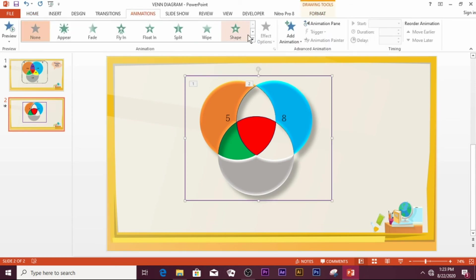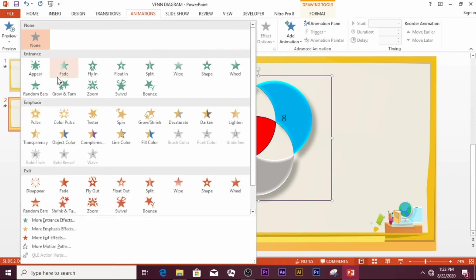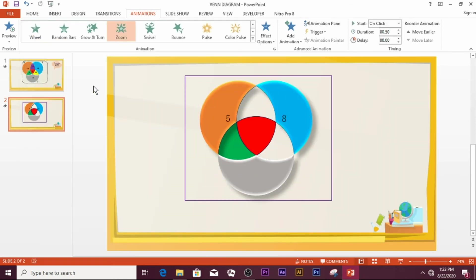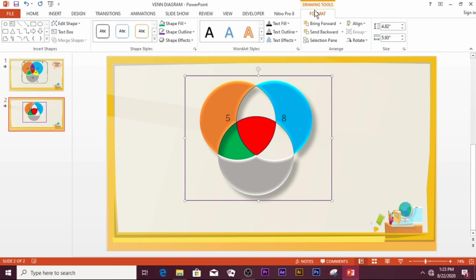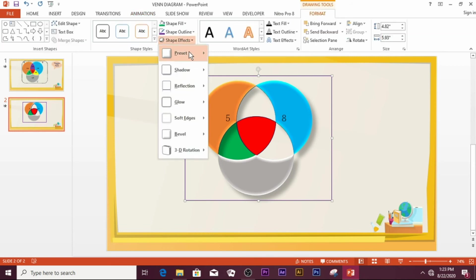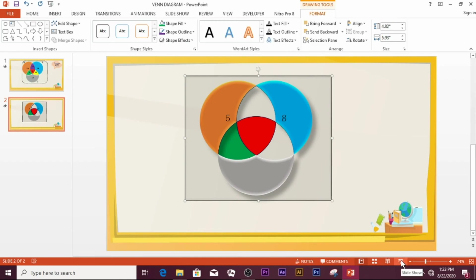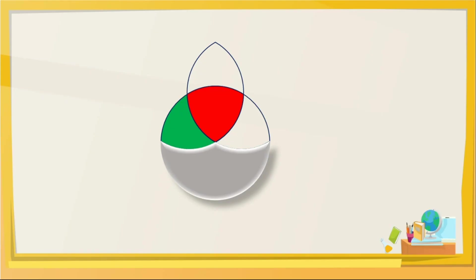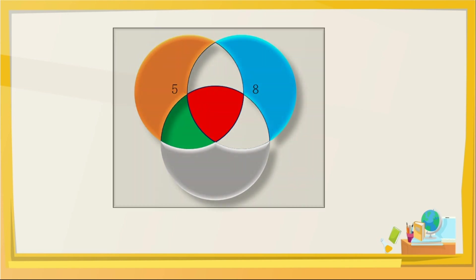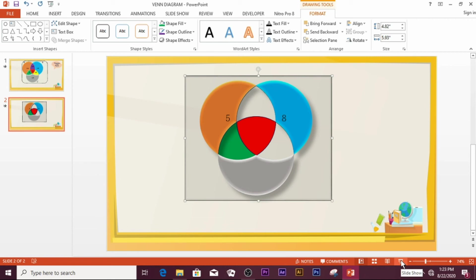Once done, click on the rectangle, go to Animations and select an animation — for example, Zoom. Then go to Format, then Shape Effects, then Preset, and select a preset design. When you run the slide show, you will see the rectangle and Venn diagram appear in sequence. That is how you draw Venn diagrams and insert animation effects.